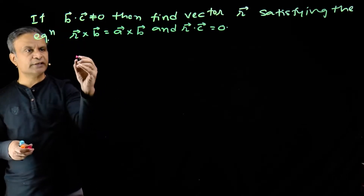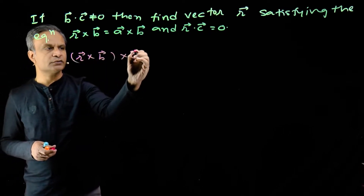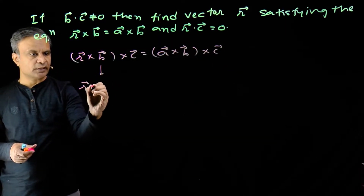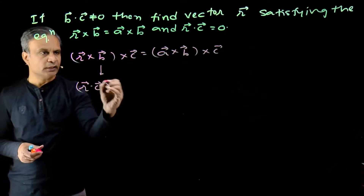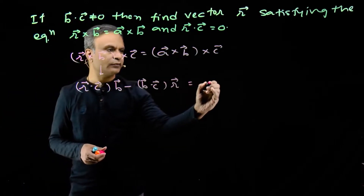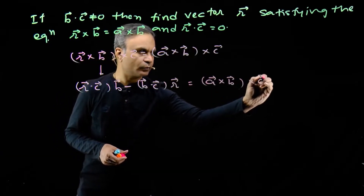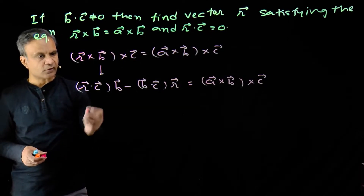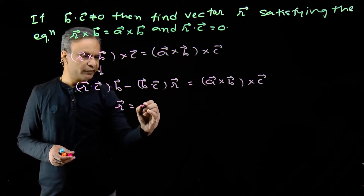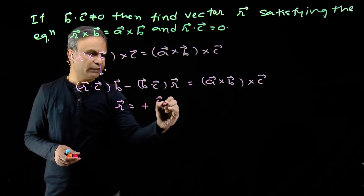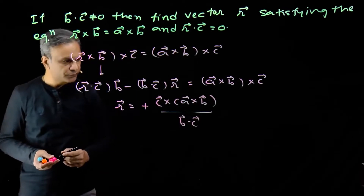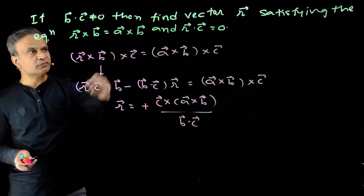Taking cross with c, we get r cross b cross c is equal to a cross b cross c. So this is r dot c times b minus b dot c times vector r, and this is equal to a cross b cross c. Now r dot c is 0, so we divide both sides by minus b dot c and get vector r is equal to c cross (a cross b) over b dot c. So we have vector r in terms of vectors a, b and c — the vector equation is solved.